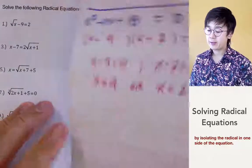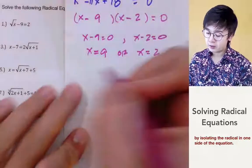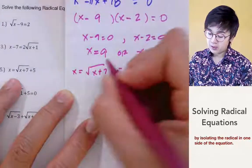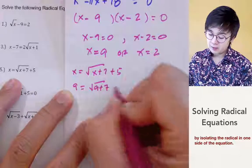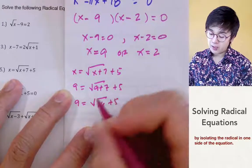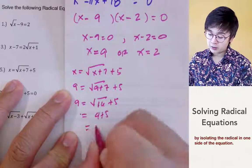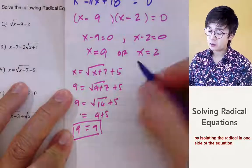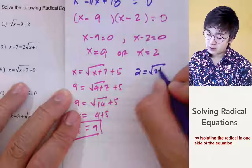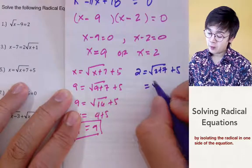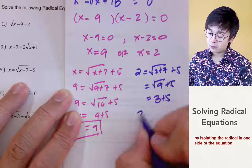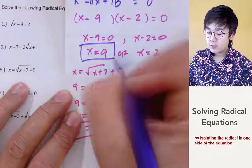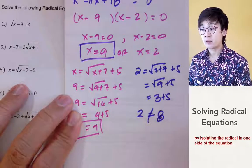Starting with x equal to 9: we have 9 equals square root of 9 plus 7 plus 5, so 9 equals square root of 16 plus 5, which is 4 plus 5 equals 9. That's a verified solution. For x equal to 2: we have 2 equals square root of 2 plus 7 plus 5, so 2 equals square root of 9 plus 5, which is 3 plus 5 equals 8. Since 2 is not equal to 8, x equal to 9 is the only solution.